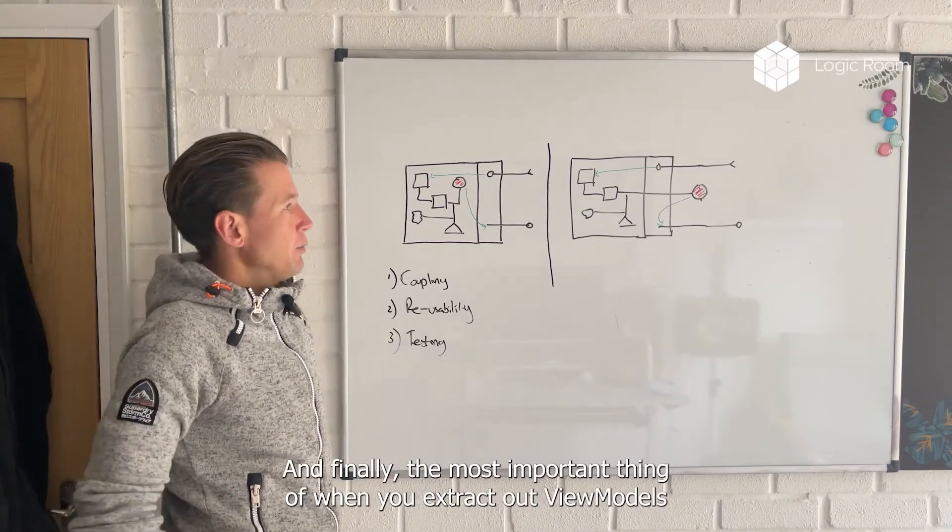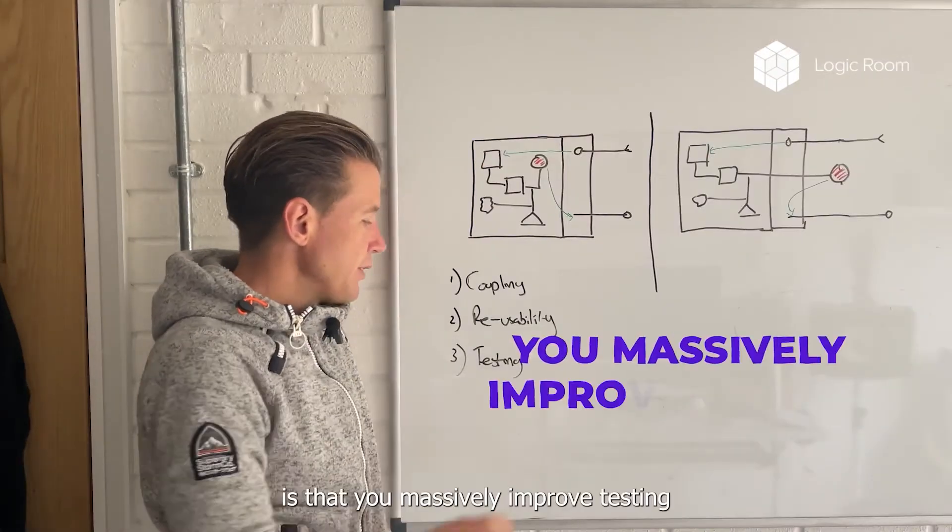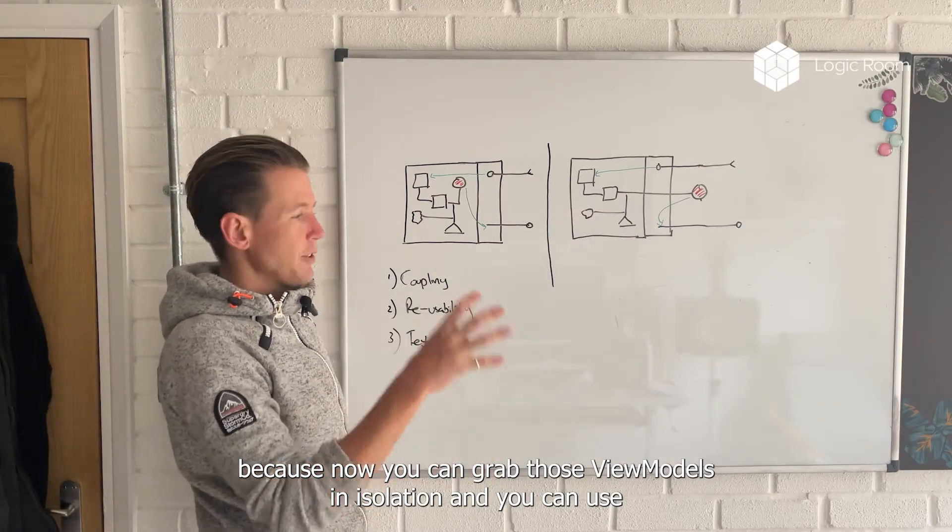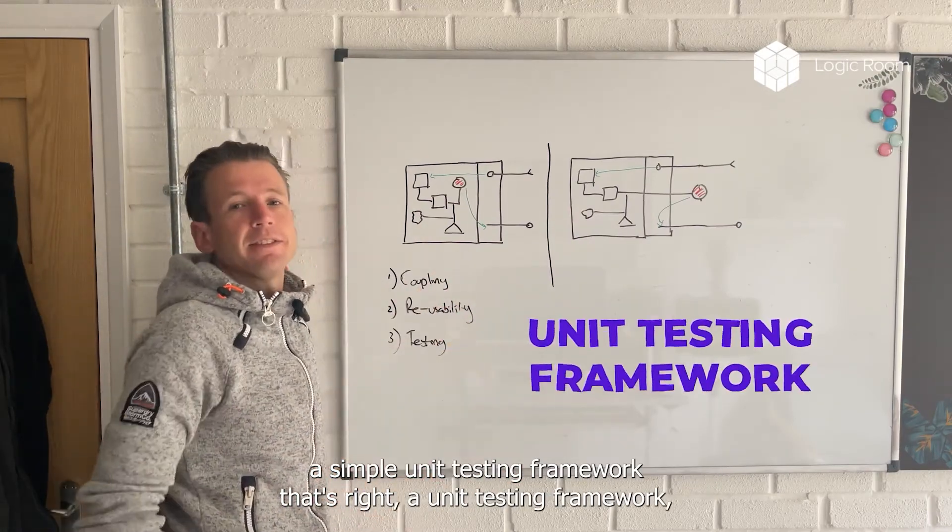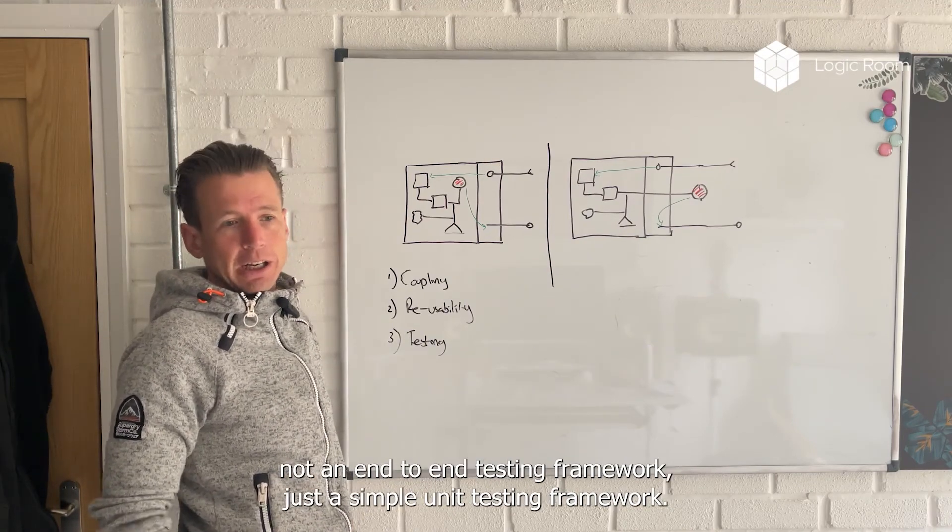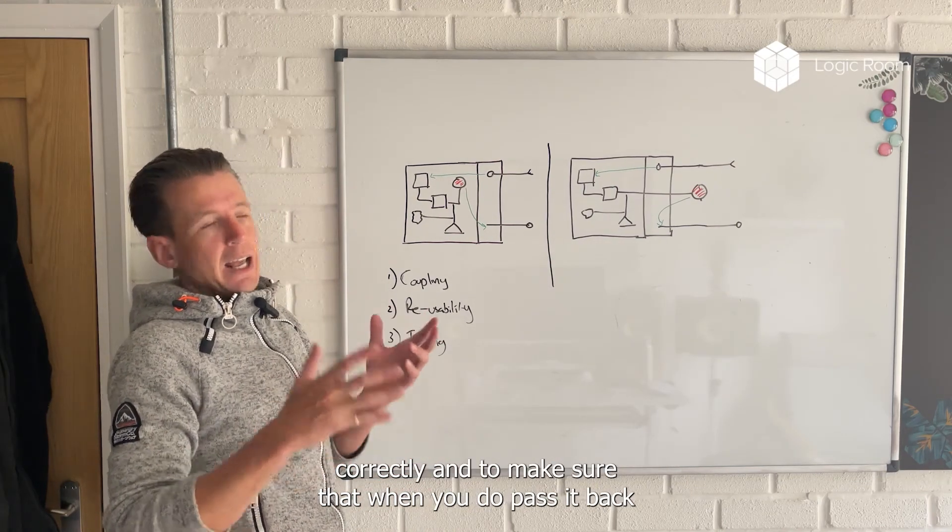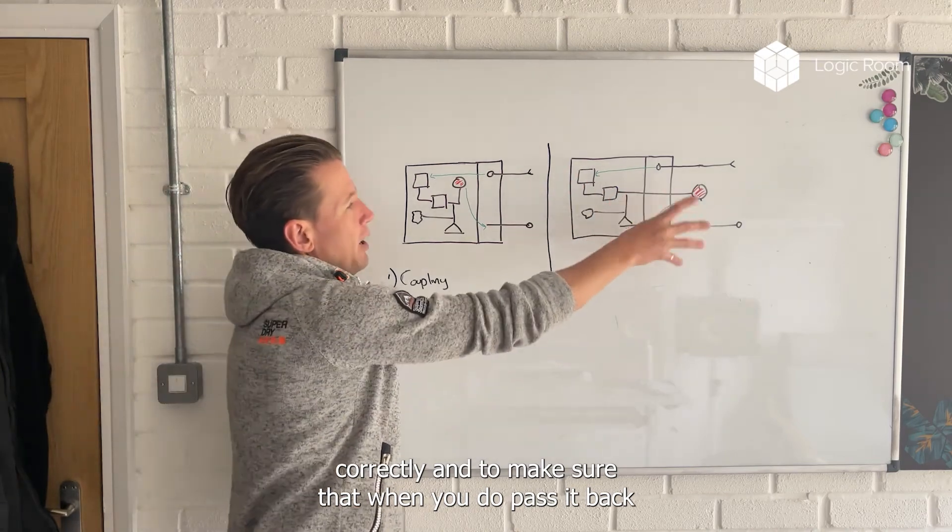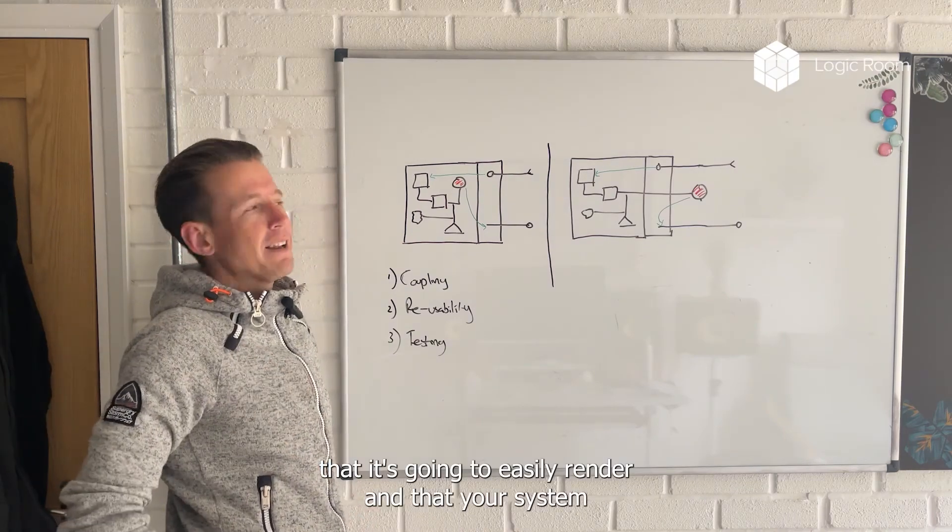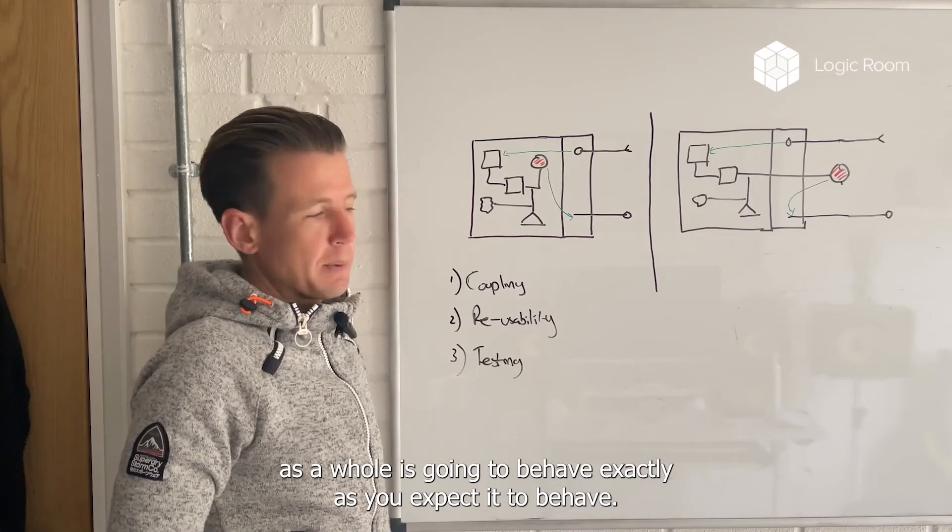And finally, the most important thing when you extract out view models from your UI architecture is that you massively improve testing, because now you can grab those view models in isolation and you can use a simple unit testing framework. That's right - a unit testing framework, not an end-to-end testing framework, just a simple unit testing framework to check the output of your system, to check that the view model was prepared correctly, and to make sure that when you do pass it back into the framework in a decoupled, reusable, and testable manner, that it's going to easily render and that your system as a whole is going to behave exactly as you expect it to behave.